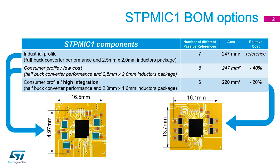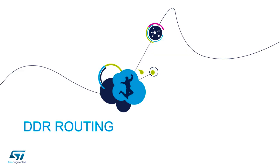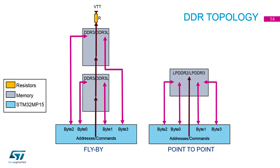DDR routing is normally classified as one of the most complex parts of the layout. You have two different topologies: fly-by topology, which uses a terminating resistor and is recommended for DDR3 or DDR3L when you want 32 bits using two 16-bit devices; or point-to-point, which is used for LPDDR2 or LPDDR3 but can also be used with DDR3 or DDR3L when you just want a single 16-bit device connected. Depending on your application, you can adopt either of these two topologies.